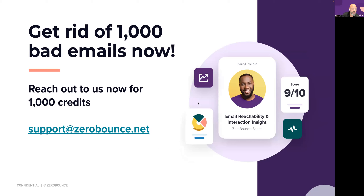We're going to do 1,000 validations for free for anyone looking to sample their database and get an idea of what's there. Reach out to our support team at support@zerobounce.net or on our live chat. Tell them you came from Litmus and they'll add 1,000 credits to your account so you can get started and get a statistical sample of your data. The cost to do this is very low, and the ROI is instant if you're currently paying to store bad data. Thank you everyone for joining me today and for being part of Litmus Live. I hope you have a great rest of your day.